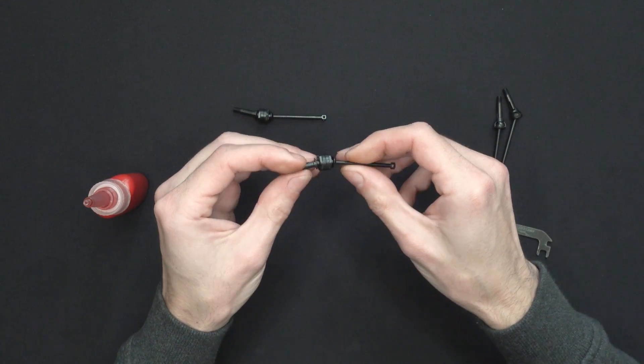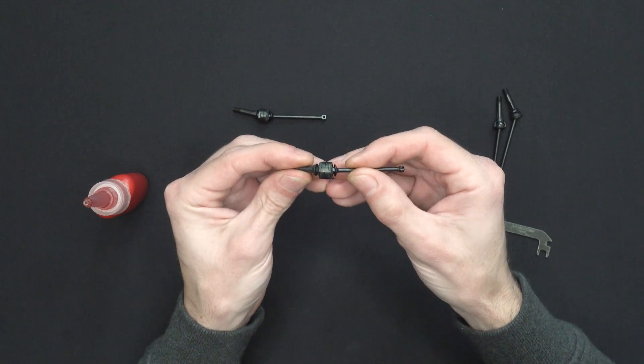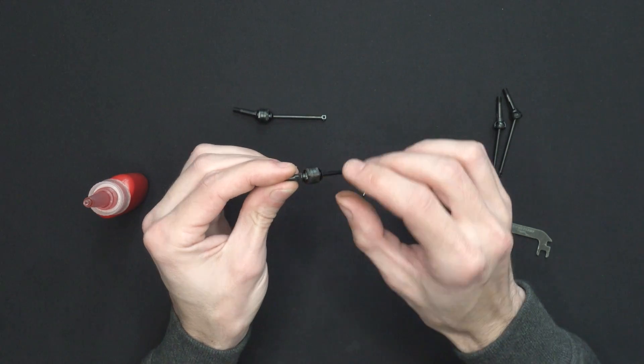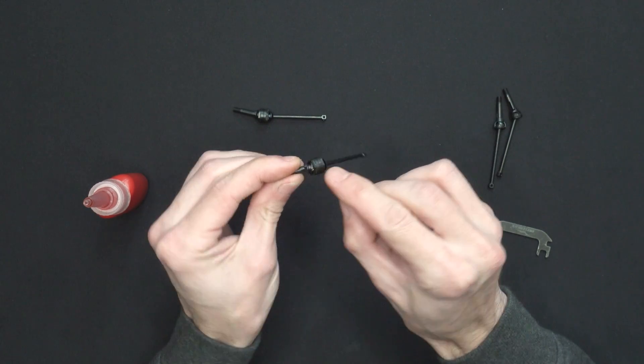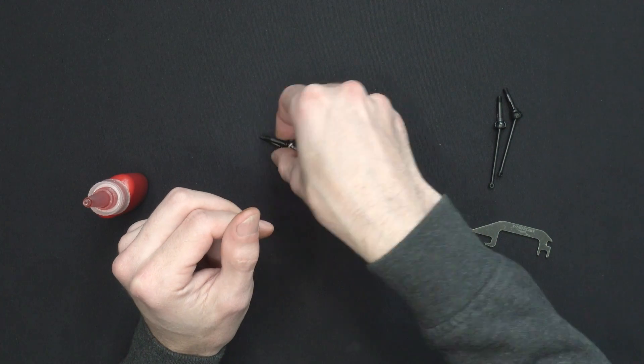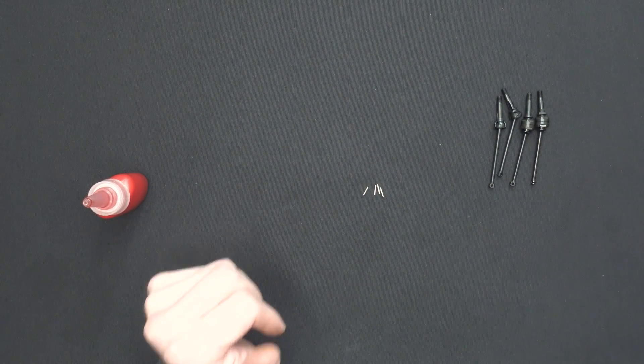Again, checking for free movement and it's always a good thing to give a final inspection to absolutely make sure it's built right. So I can see the two pins are lined up on this one, this one as well. All right, we're done with the drive shafts.